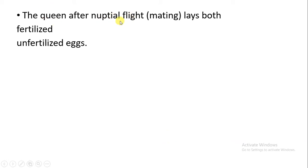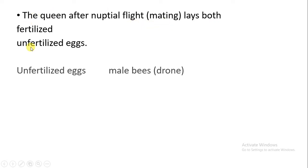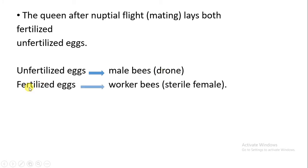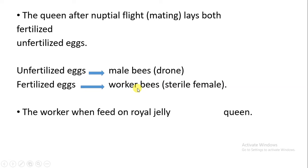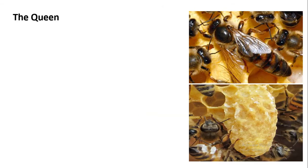When the queen does the copulation — the nuptial flight, that is the mating process — she is able to lay both types of eggs: fertilized eggs, which give rise to worker bees (female), and unfertilized eggs, which give rise to the drone (male). Whenever royal jelly is given as food, it gives rise to the queen; if royal jelly is not given to the worker larva, it gives rise to the worker bee.